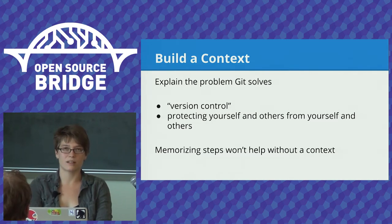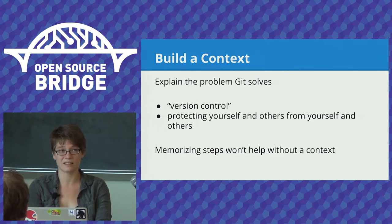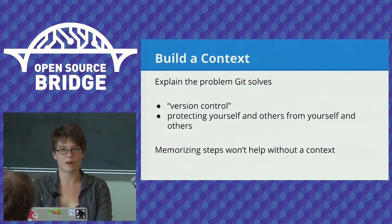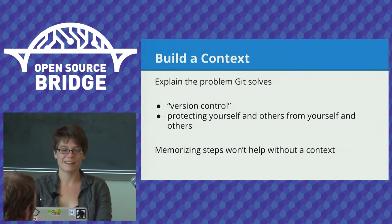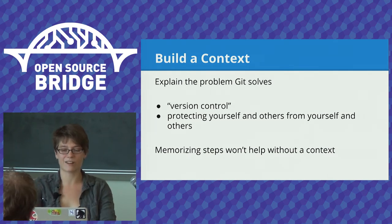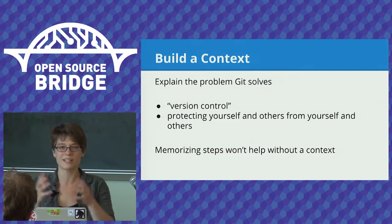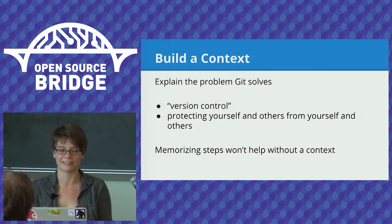Git has the really unfortunate problem that a lot of the words don't really mean anything, or they don't mean what they colloquially mean to most people. 'Commit' is probably the worst one. 'Remote' is pretty bad too. So really explain all of this, because when you get to the point where you're saying 'we're committing to these changes,' it'll make a lot more sense if they already have some idea of the environment they're working in.